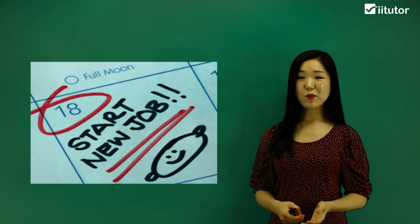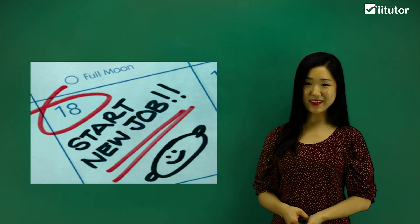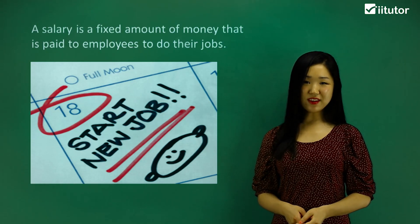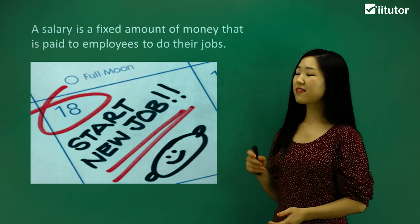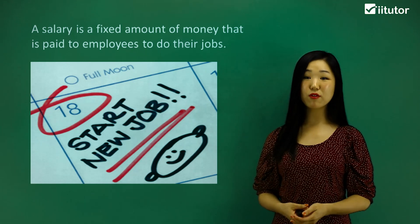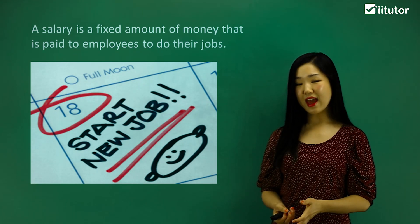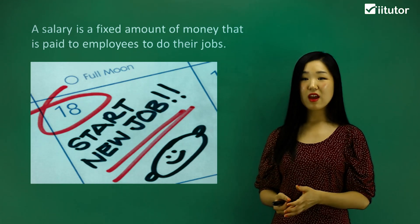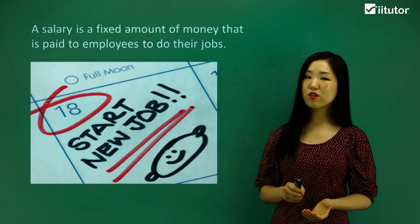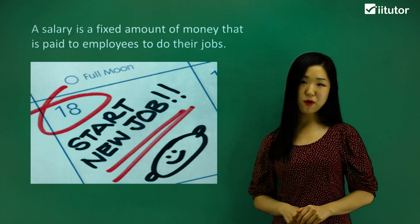When we work we receive a salary from our employers. A salary is the fixed amount that we receive from our employers for the amount of work that we've done. Salary can be referred to as a yearly salary, but it could be different depending on the type of work that we do.